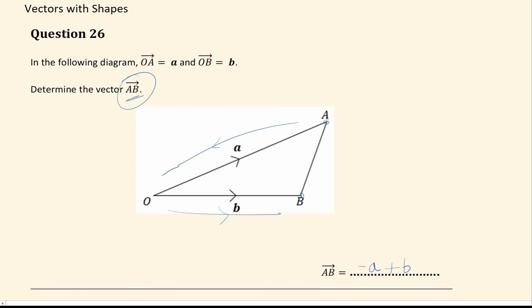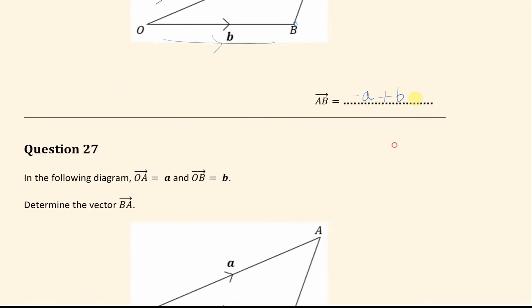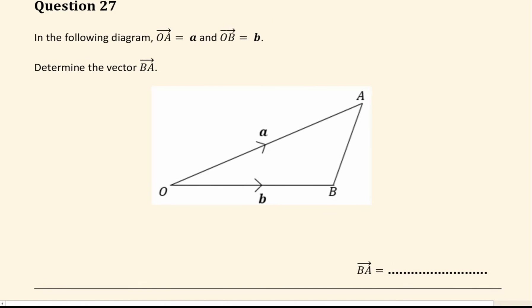For these questions the direction is really important. Next question, same idea, same question, but here you want the vector BA. This means we're going from B to A. So again we have to go along paths that we know, so we go backwards this direction, so that's minus b, and then along this direction, so minus b plus a.